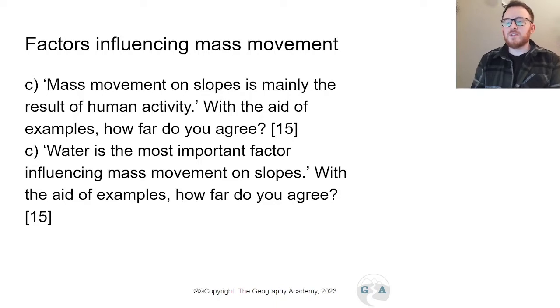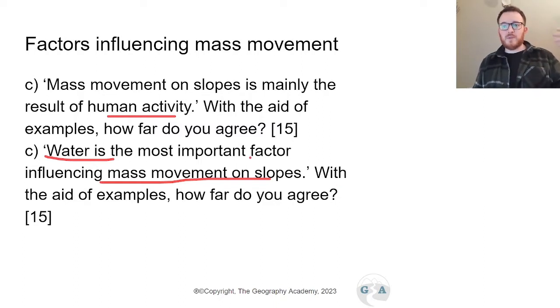Sticking with the mass movement section, the next one is looking at the causes of it. Mass movement is mainly the result of human activity and water is the most important factor influencing mass movement on slopes. So you see in the first one you could have a paragraph about how human activity is the most important and then you could have how levels of precipitation and levels of waters in different stores may influence it. And then you might have a third factor that you might discuss as well.